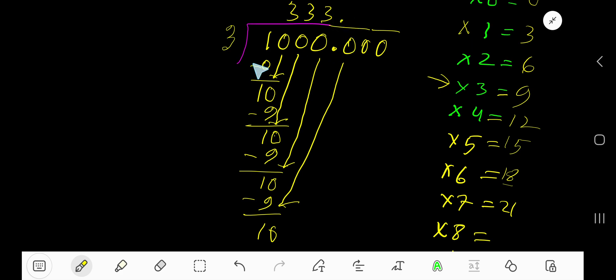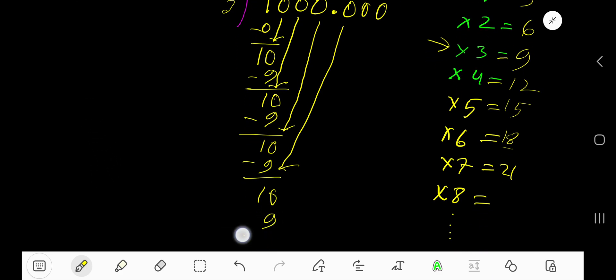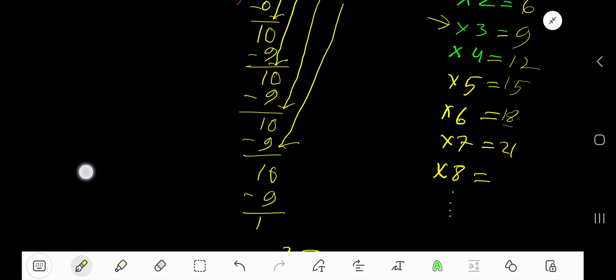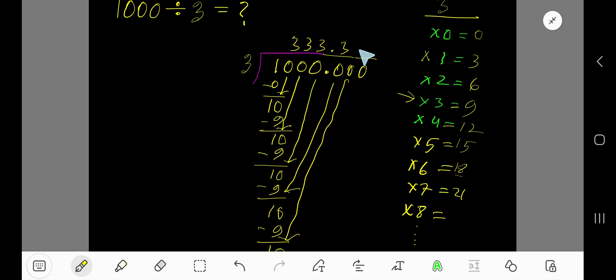3 goes into 10 how many times? Again 3 times. 3 times 3 is 9. Subtract, getting 1. Bring down the next 0, so again you're getting 10.